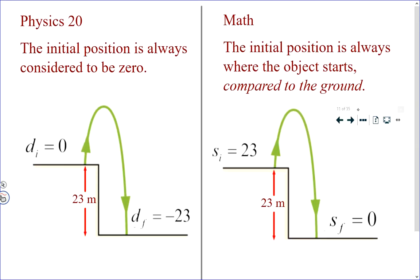One other thing I need to address is that in Physics 20, the initial position is always considered to be zero. So for example, if an object were thrown upwards from the top of a 23 meter tall building, what we would say in Physics about this situation is the object had an initial position of zero, and its final position is negative 23 meters, so we would say that the displacement is negative 23. Now a big difference is that in math we never worry about the word displacement — we only worry about the word position.